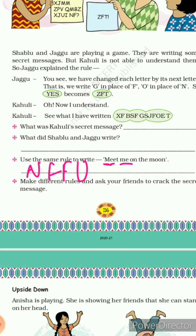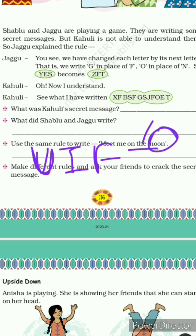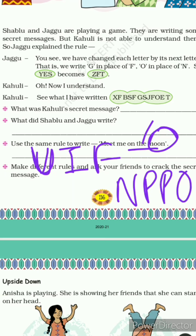Next, 'me' ke liye: M ke baad N, and E ke baad F. So yeh jayega N F. 'The' ke liye: T ke baad U, H ke baad I, and E ke baad F. So 'the' ka likha jayega U I F. 'Moon' ke liye: M ke baad N, O ke baad P, O ke baad P, and N ke baad O. So moon ho jayega N P P O.